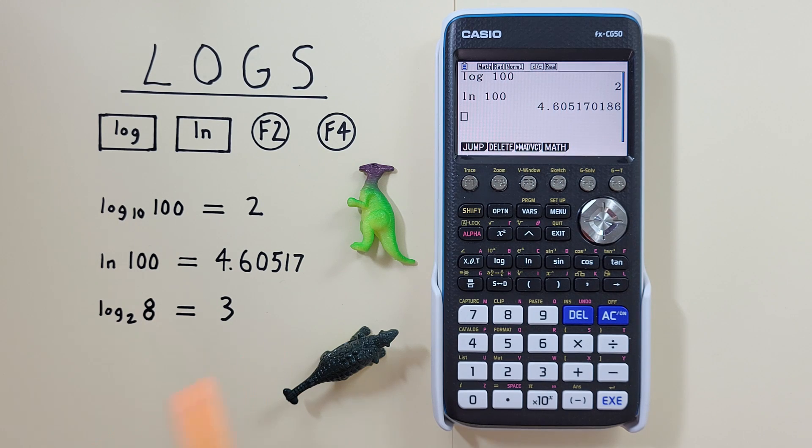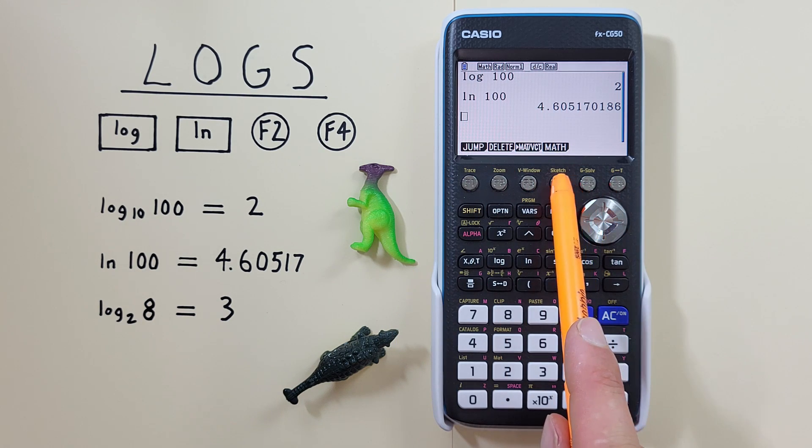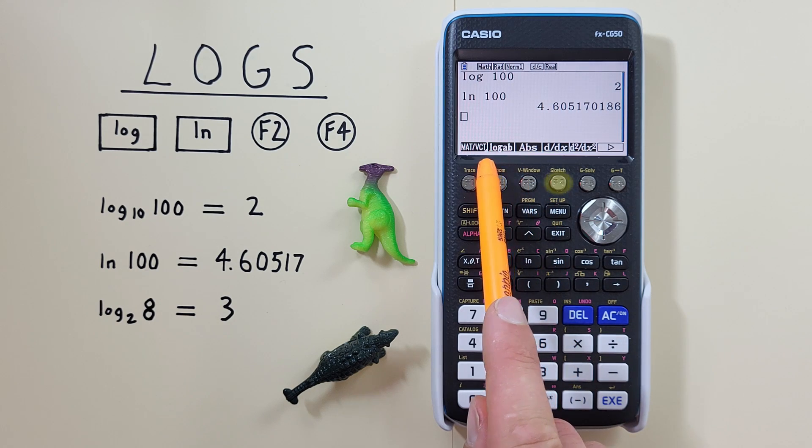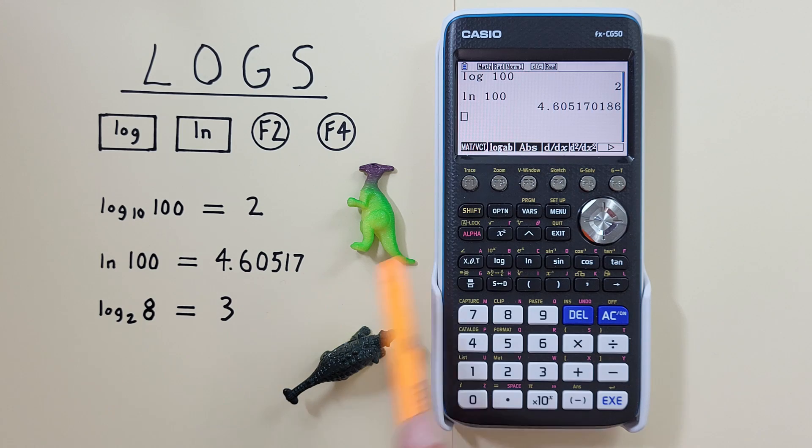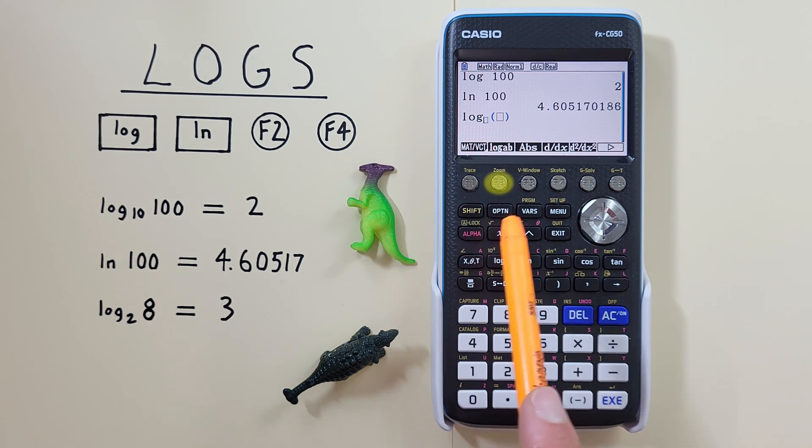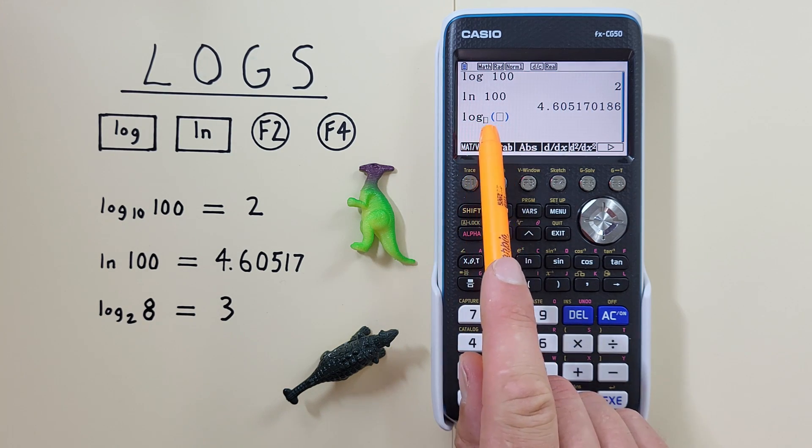To do that, from the main menu, first we press the F4 key so that we see log AB here under F2. We select that with the F2 key so that we get log and two open boxes here.